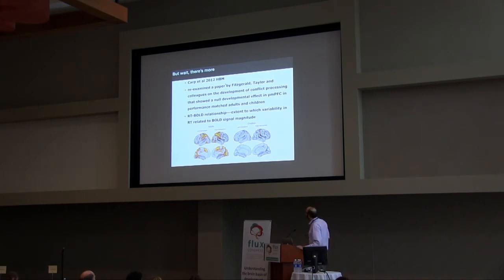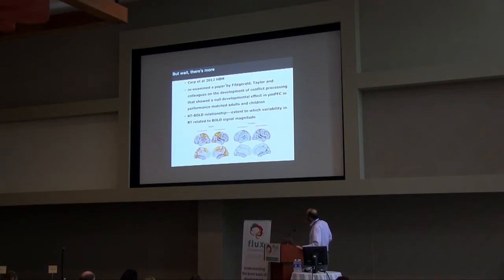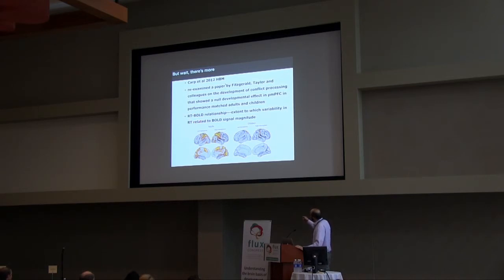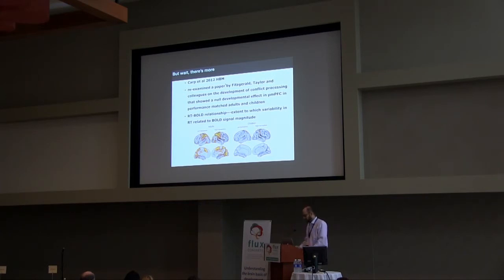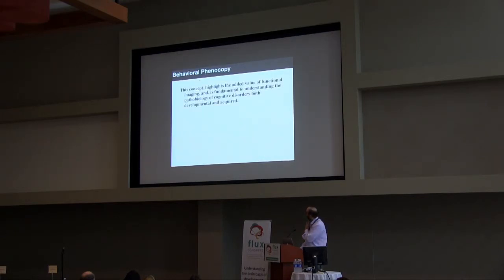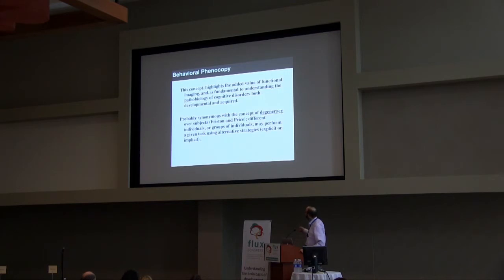But there's more to performance matching than I've depicted, and I think this is relevant to what Russ is bringing up too. This is a paper by Karp Weissman et al. from 2012. They pulled out a study by Fitzgerald and Taylor — a conflict task with a multi-source interference task looking at the relationship between reaction time and BOLD. What they saw was that in adults, the BOLD signal has a more robust relationship with reaction time than in kids. By controlling for that relationship, they were able to turn a null result between kids and adults into a positive one. The behavioral phenocopy gives us added value to functional imaging — we see differences in the way information is processed despite comparable performance. It's probably synonymous with the concept of degeneracy that Friston and Price have been discussing for some years.